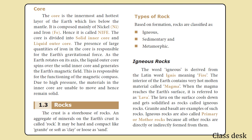Rocks are divided into three types: igneous, sedimentary, and metamorphic. Igneous rocks — the word igneous is derived from the Latin word ignis, meaning fire. In the interior of the earth, rock is in a molten state called magma. When magma reaches the surface, it is called lava. When lava cools, it forms igneous rock — for example, granite. Igneous rocks are also called primary or mother rocks, because all other rocks are directly or indirectly formed from them.